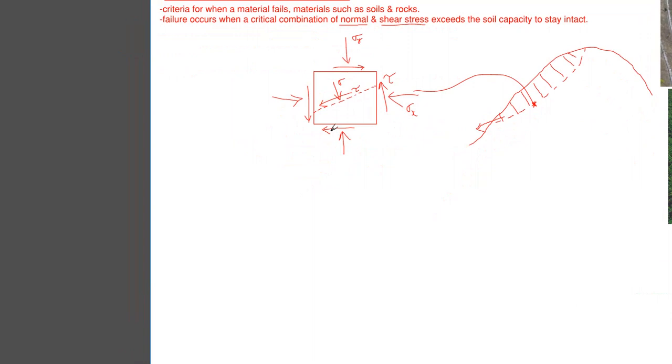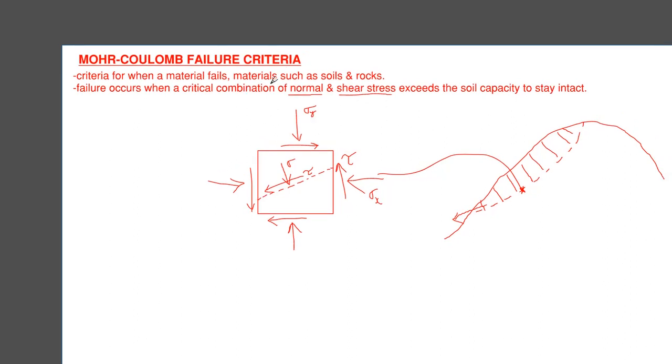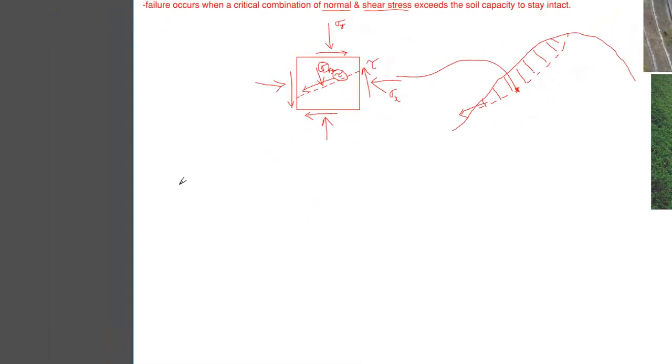So to do that, we can go back to our criteria. Now, Mohr-Coulomb said that these two things - normal and shear stresses - they're related to each other. And what does that relation look like?